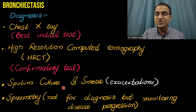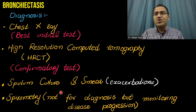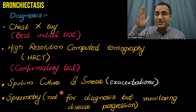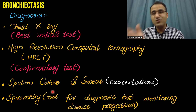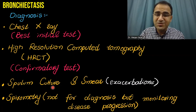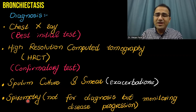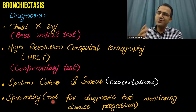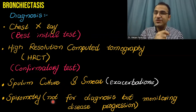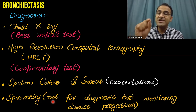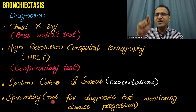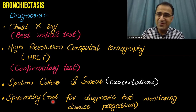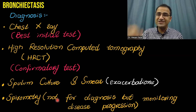You can also perform sputum culture and smear because these patients are highly prone to infections, and infections usually cause exacerbations. Spirometry is not used for diagnosis but is used for monitoring disease progression. It usually shows an obstructive pattern where FEV1 is low and the FEV1-to-FVC ratio is low.